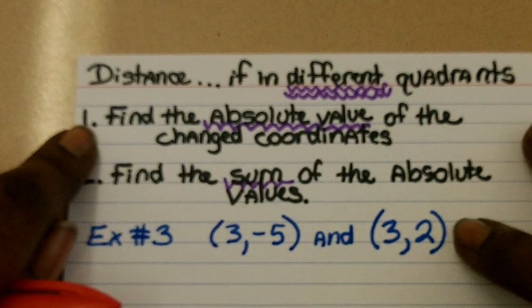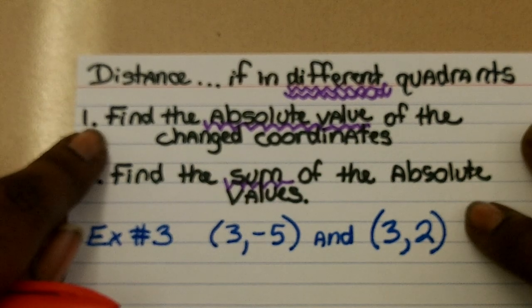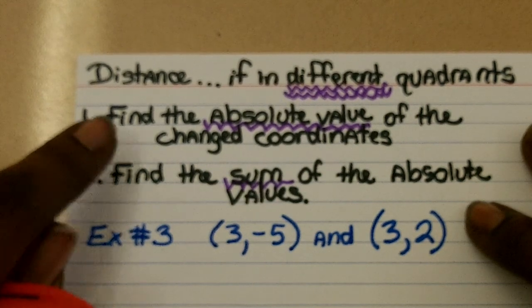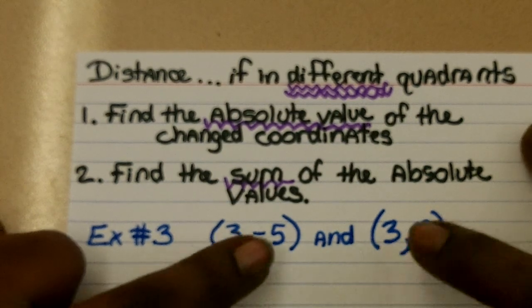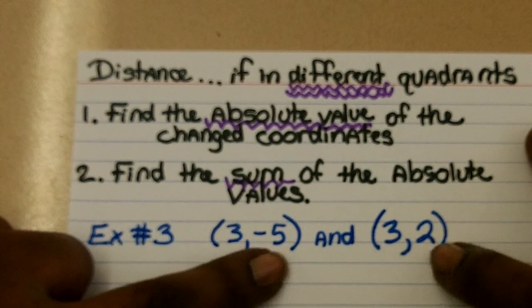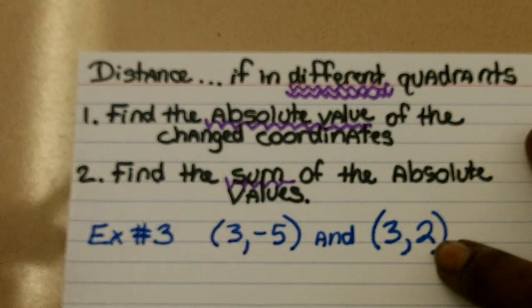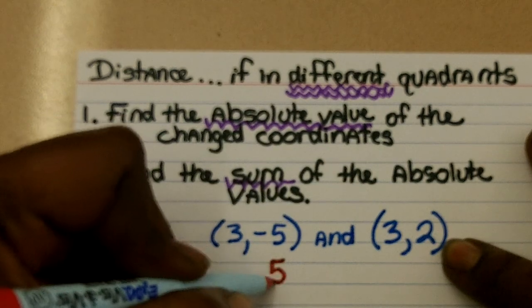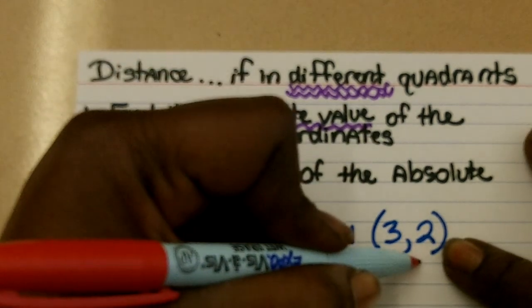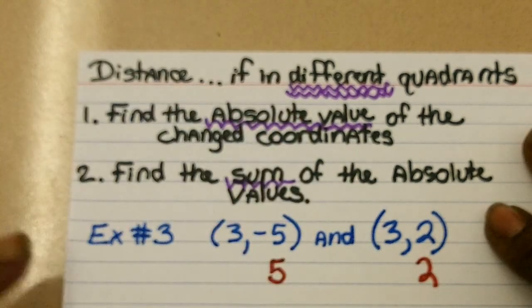So step one is to start by finding the absolute value of the changed coordinates. Again, we have our x in both that appear to both be 3, and our y in both seems to be what's changing. So we need to find the absolute value of our y's. The absolute value of negative 5 is 5, and the absolute value of 2 is 2.